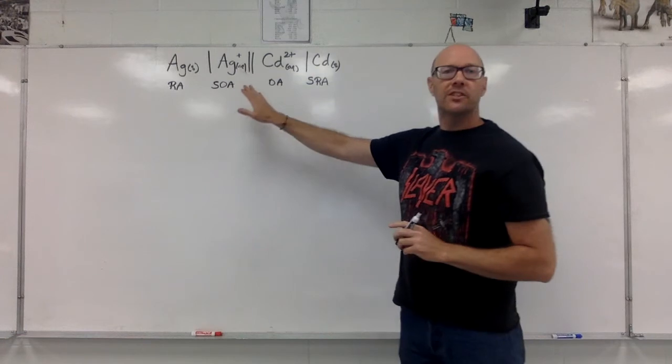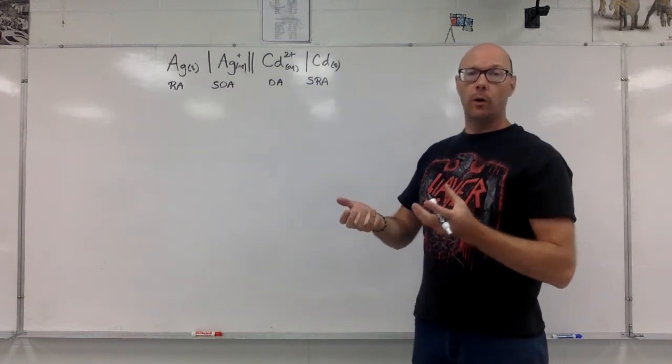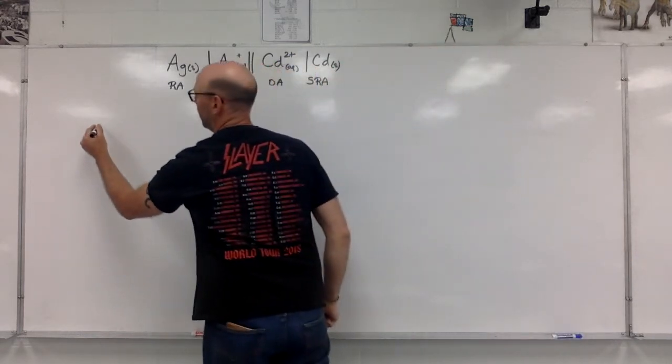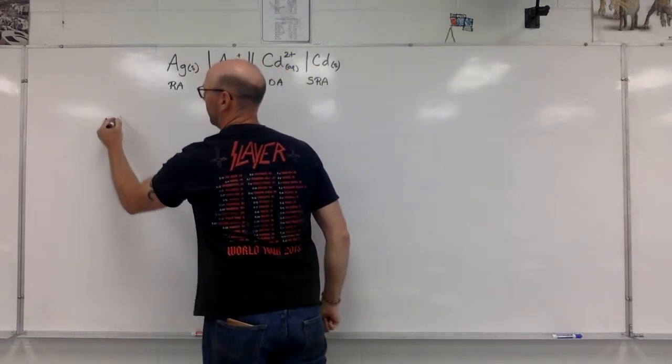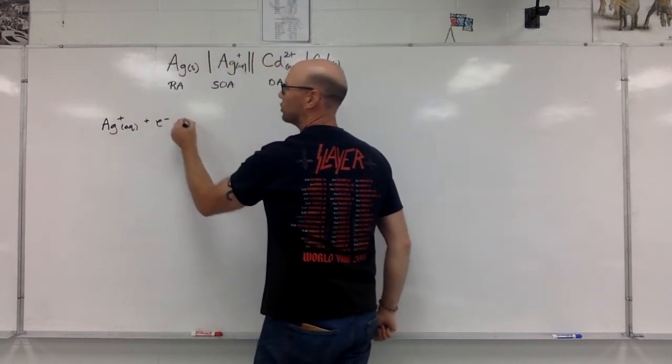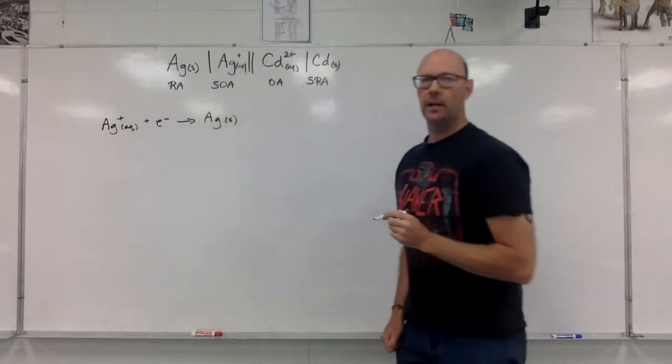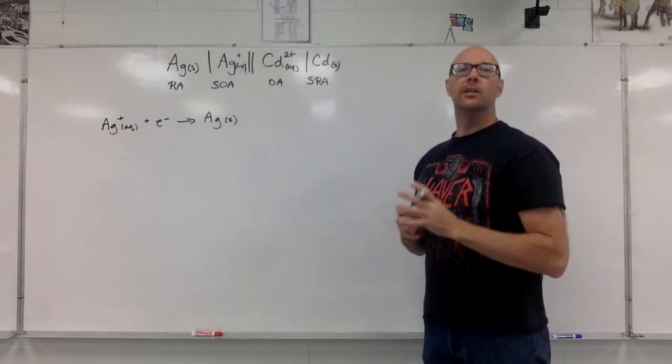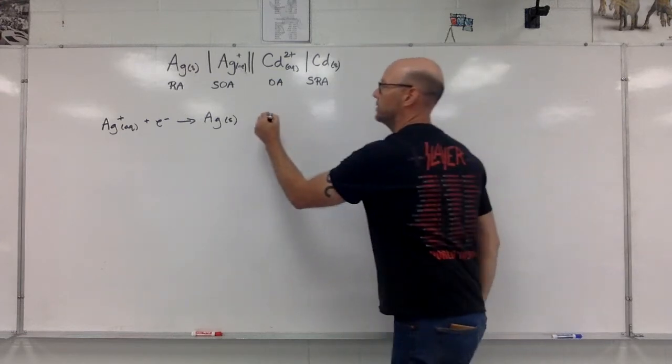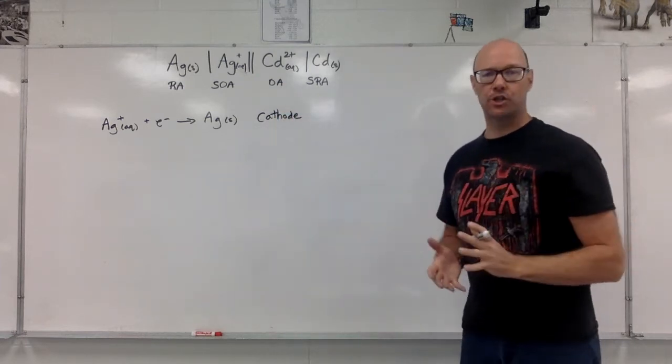The strongest oxidizing agent - for its half reaction, I'm going to just copy it out of the data booklet. That's Ag plus gains an electron to become silver solid. That reduction is going to take place at the cathode. This is the cathode half reaction.